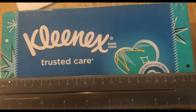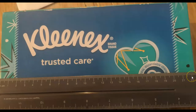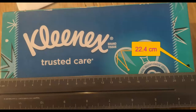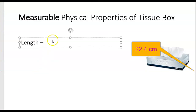Now let's go to the end of the tissue box. We see that the tissue box is longer than 22 centimeters but not quite 23 centimeters. Looking carefully: 22, 22 and one-tenth, 22 and two-tenths, 22 and three-tenths — it looks like it's 22 and four-tenths centimeters, which is written as 22.4 centimeters in decimal form.